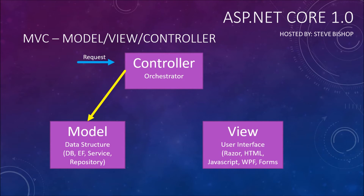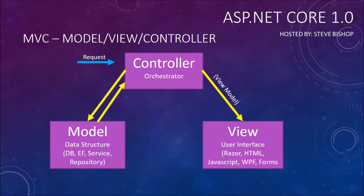The controller then goes out and looks for the model it needs to fulfill that request. The model comes back to the controller, and the controller passes that model structure to the view. A good practice is to use something called a view model — you orchestrate the model into a very particular type of class that you want to pass to the view, comprising different pieces of the model you want to show the user. Then that view is sent on as the response object back to the user.